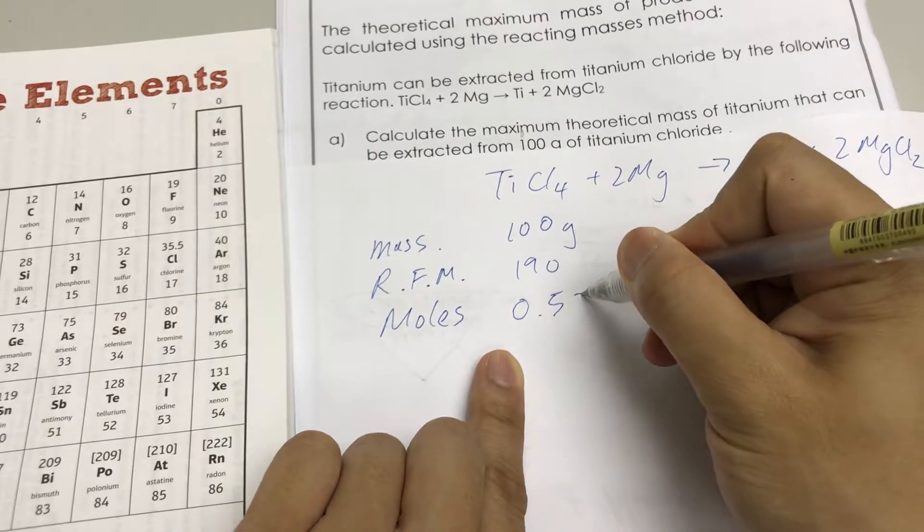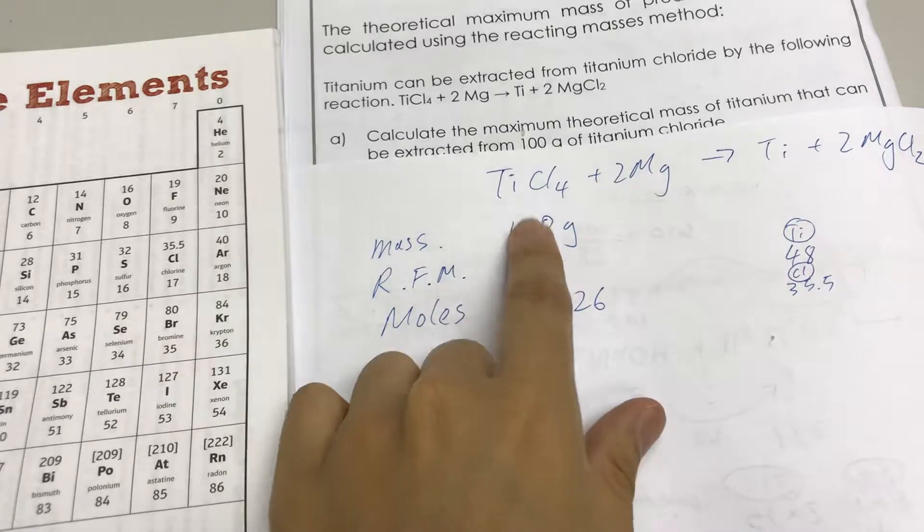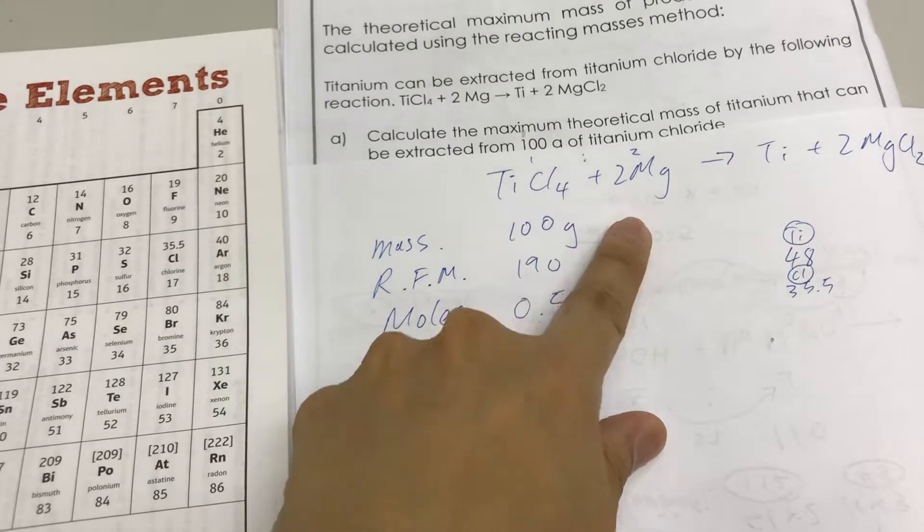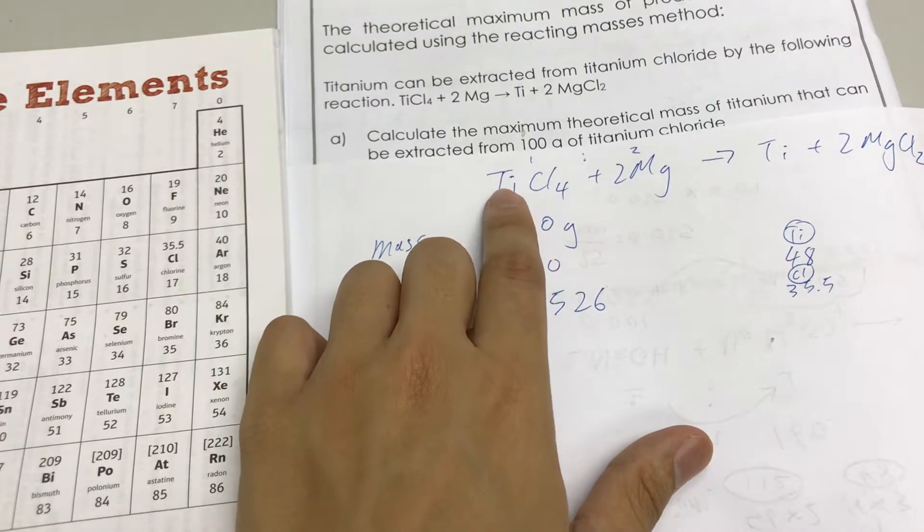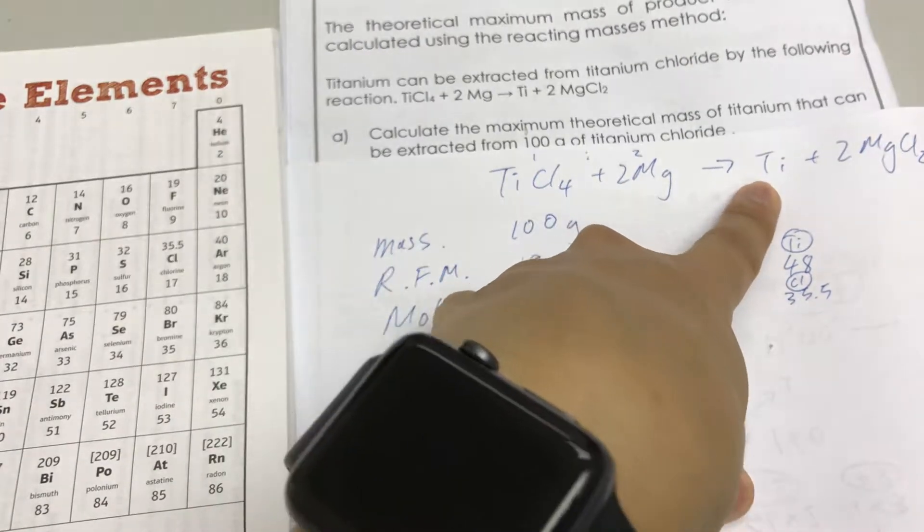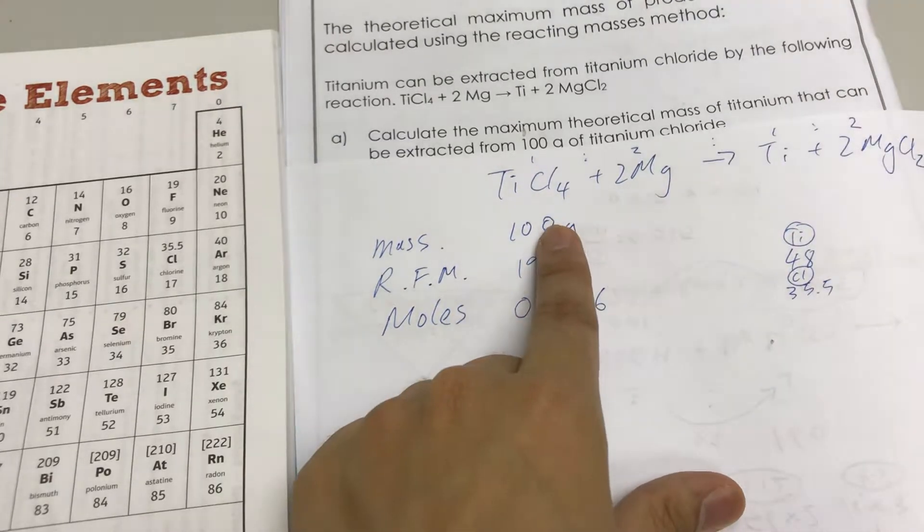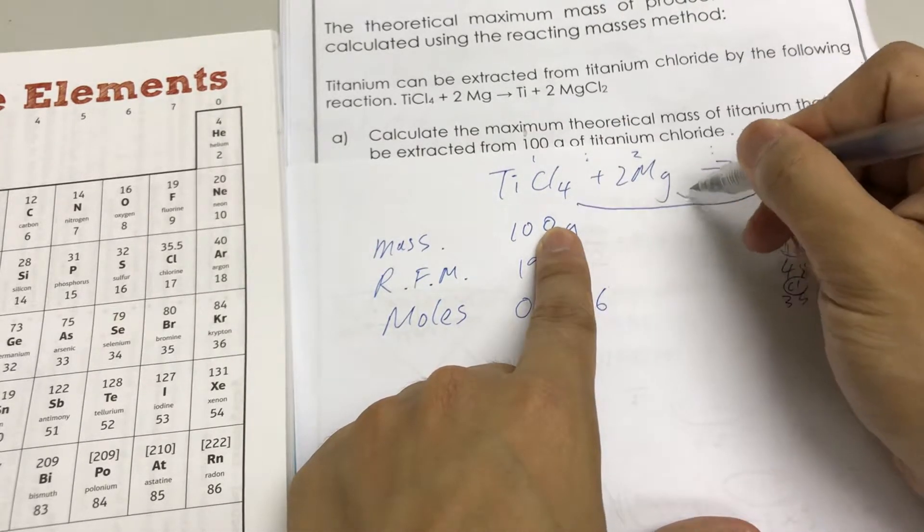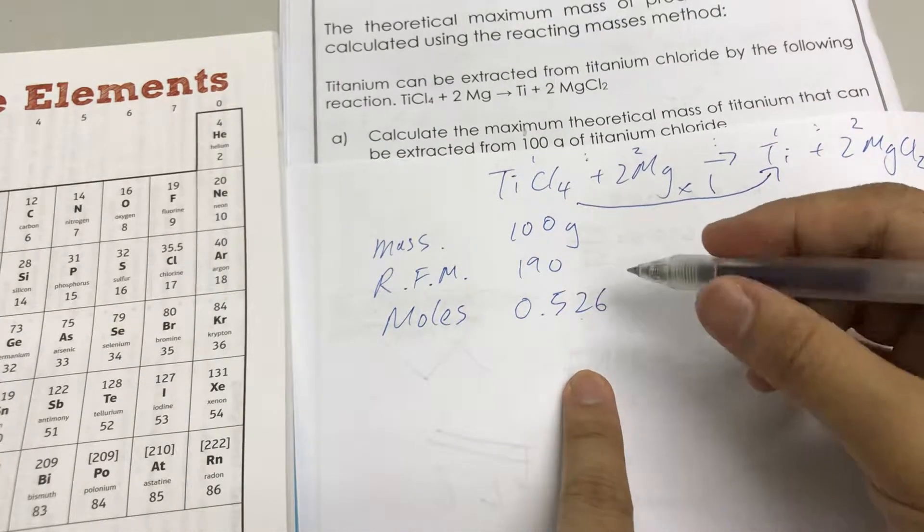Now the ratio here is 1 to 2. But this is not what we want; we want to work out the amount of titanium which we can get. 1 to 2 to 1 to 2. This time we want 0.526. We want to work out this ratio, 1 to 1, so it's just times 1. The amount of titanium, technically it's also just times 1.